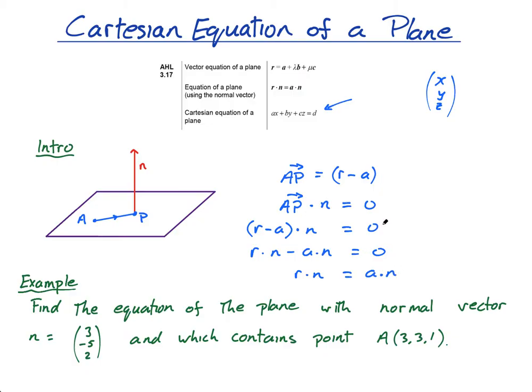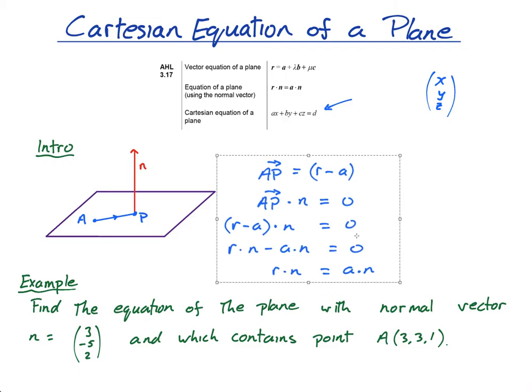This is my, this is this formula. This is where it comes from. Do you need to know what I've just done there? Well, not really, you wouldn't be asked to show that. But, it's certainly nice to understand where this comes from. So this is the formula, R dot N equals A dot N.